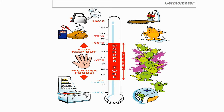Now let's look at the temperature danger zone — it's worth writing these down. On a thermometer from minus 18°C (freezing) up to 100°C (boiling): at minus 18°C, the freezer temperature, bacteria will survive — they don't die by freezing, they go into hibernation. So if you defrost raw meat it will still contain pathogens.